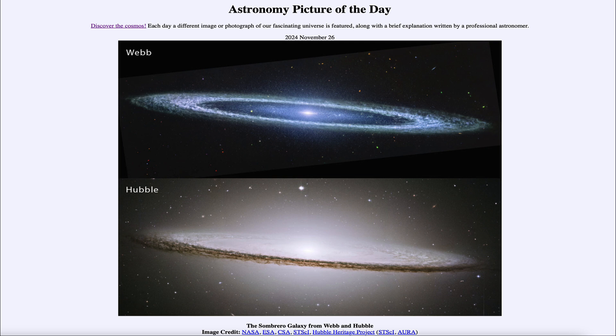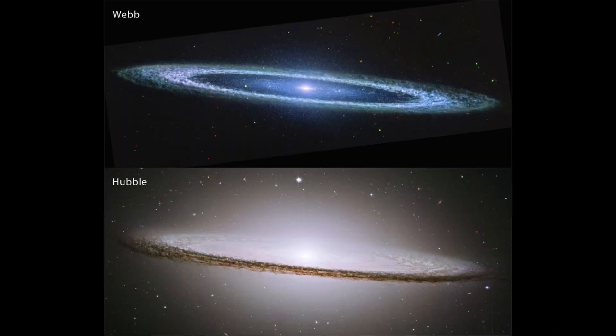So what do we see here? Well, here we see two images of what is known as the Sombrero Galaxy, also known by a catalog designation of M104. This is an example of a spiral galaxy and one of the larger galaxies in a nearby cluster of galaxies known as the Virgo Cluster.